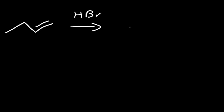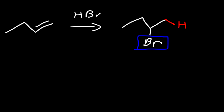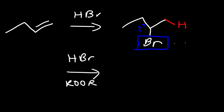This reaction proceeds with Markovnikov selectivity, meaning that the hydrogen will go on the less-substituted carbon — the carbon that has more hydrogen atoms — and the bromine will go on the more-substituted carbon, the one that has fewer hydrogen atoms. Now, there's another reaction: HBr with peroxides. If you see that, it will give you the anti-Markovnikov product, where the bromine atom goes on the less-substituted carbon atom. So watch out for that one if you see HBr with peroxides.